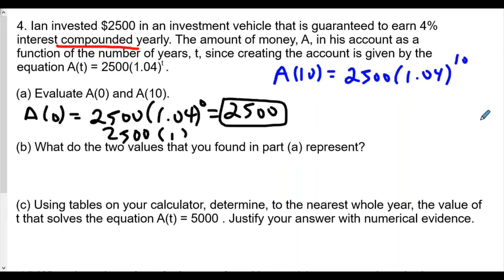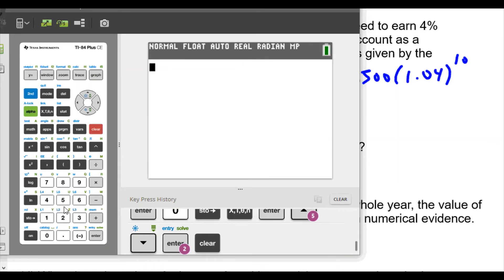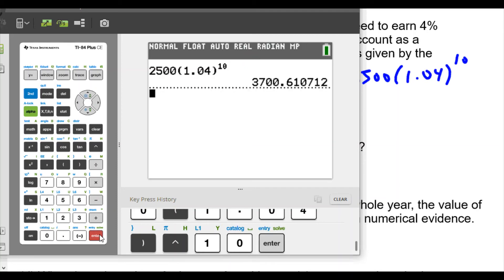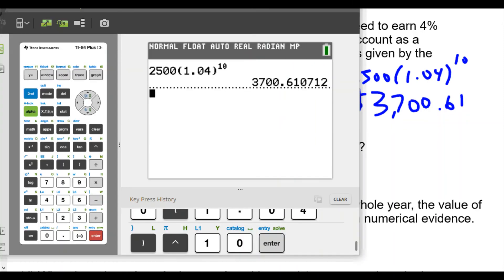So that's how much we're going to have at the beginning, when A of 0 means in the 0 year. How much is it worth? Well, it's just the amount we put in. Well, for the second one, A of 10 is equal to 2,500 times 1.04 raised to the 10th power. Here, we're going to break out a calculator. So let's pick out our calculator here. Let's clear this from before. So we have a value of 2,500 times 1.04 raised to the power of 10. And we find our value should be $3,700.61.